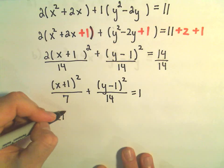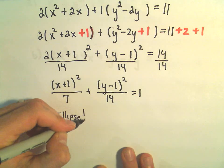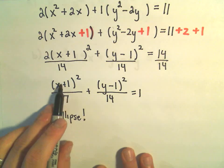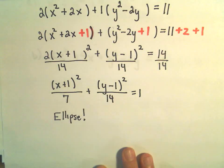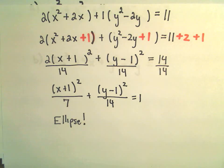So I would say, hey, this is an ellipse. It looks like it's centered at negative 1, positive 1. And I think that's probably enough in this case.